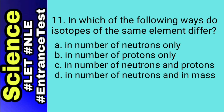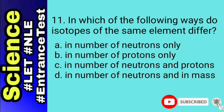For this number, let's define isotope. Isotopes are atoms of the same element that differ in the number of neutrons they contain. Likewise, isotopes are identified by their mass numbers. Thus, the answer for number 11 is letter D: number of neutrons and mass.